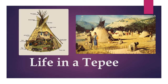The door of the teepee always faced east toward the rising sun. Beds within were buffalo hides on the ground and chairs consisted of backrests made of wooden rods that were tied together and propped up on three legs. The furniture could be easily rolled and packed when the tribe moved on. There were roles and etiquette in place for life within the teepee so that all could live in harmony together, much like the rules and etiquette we follow today.